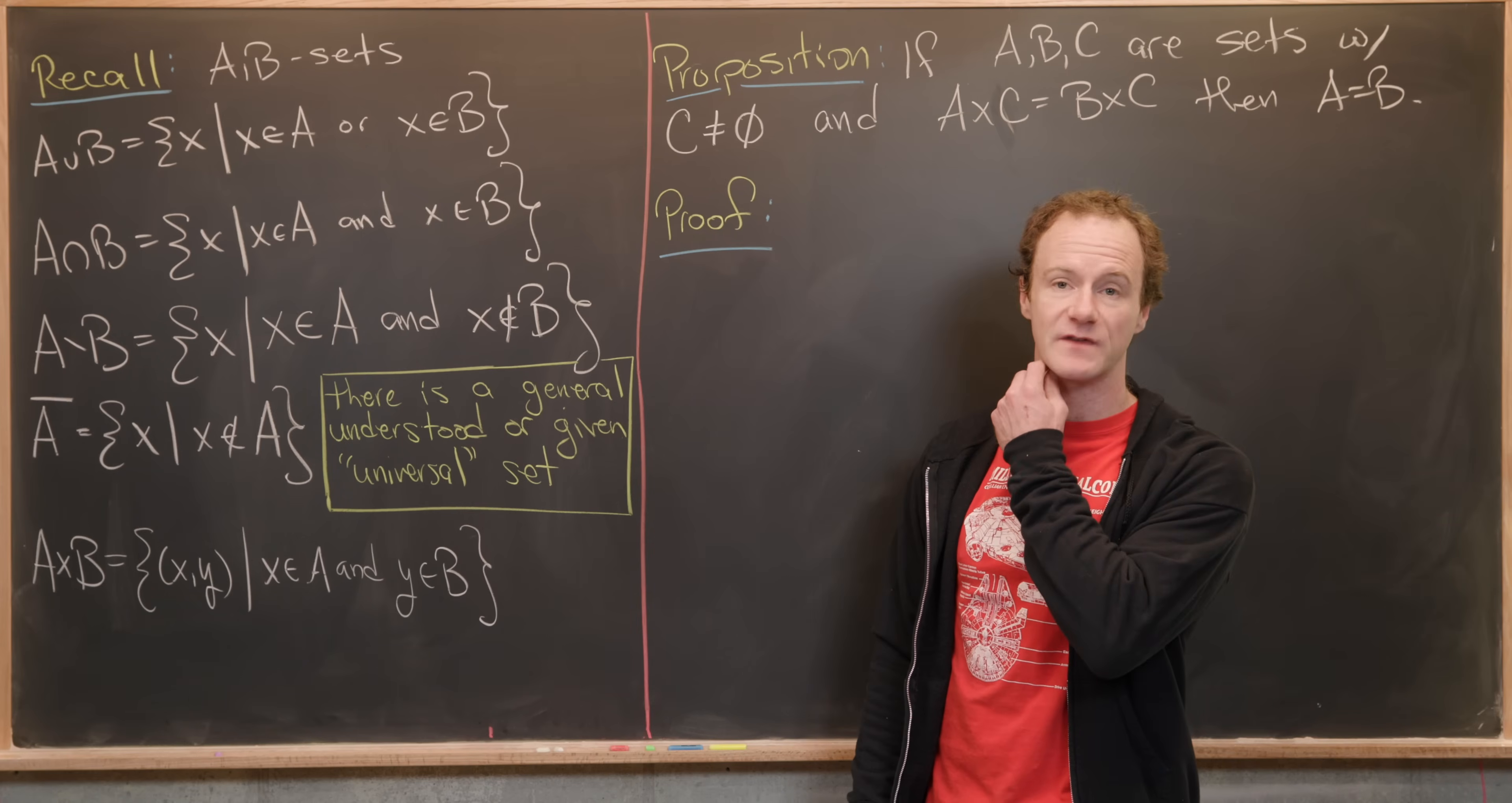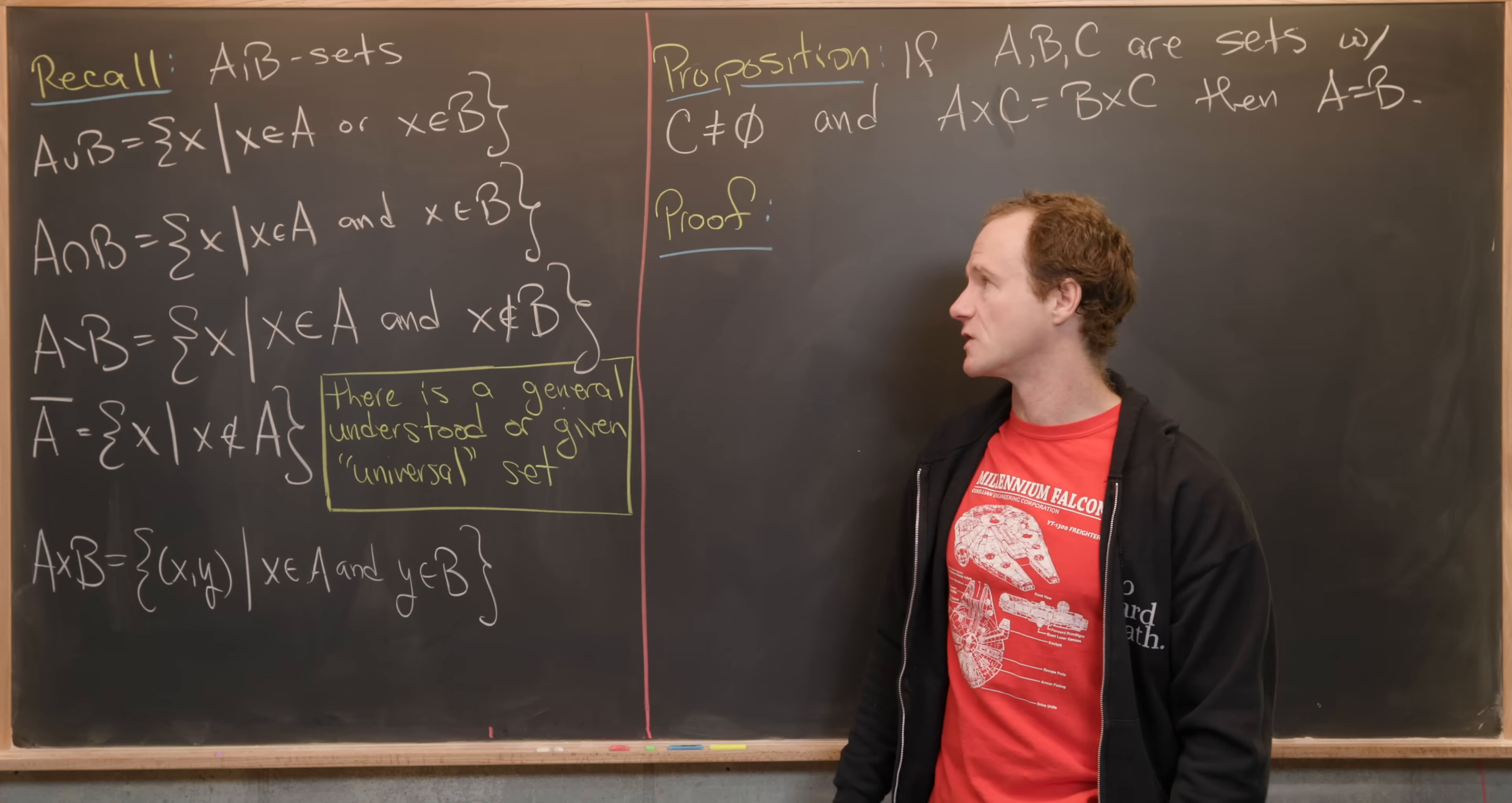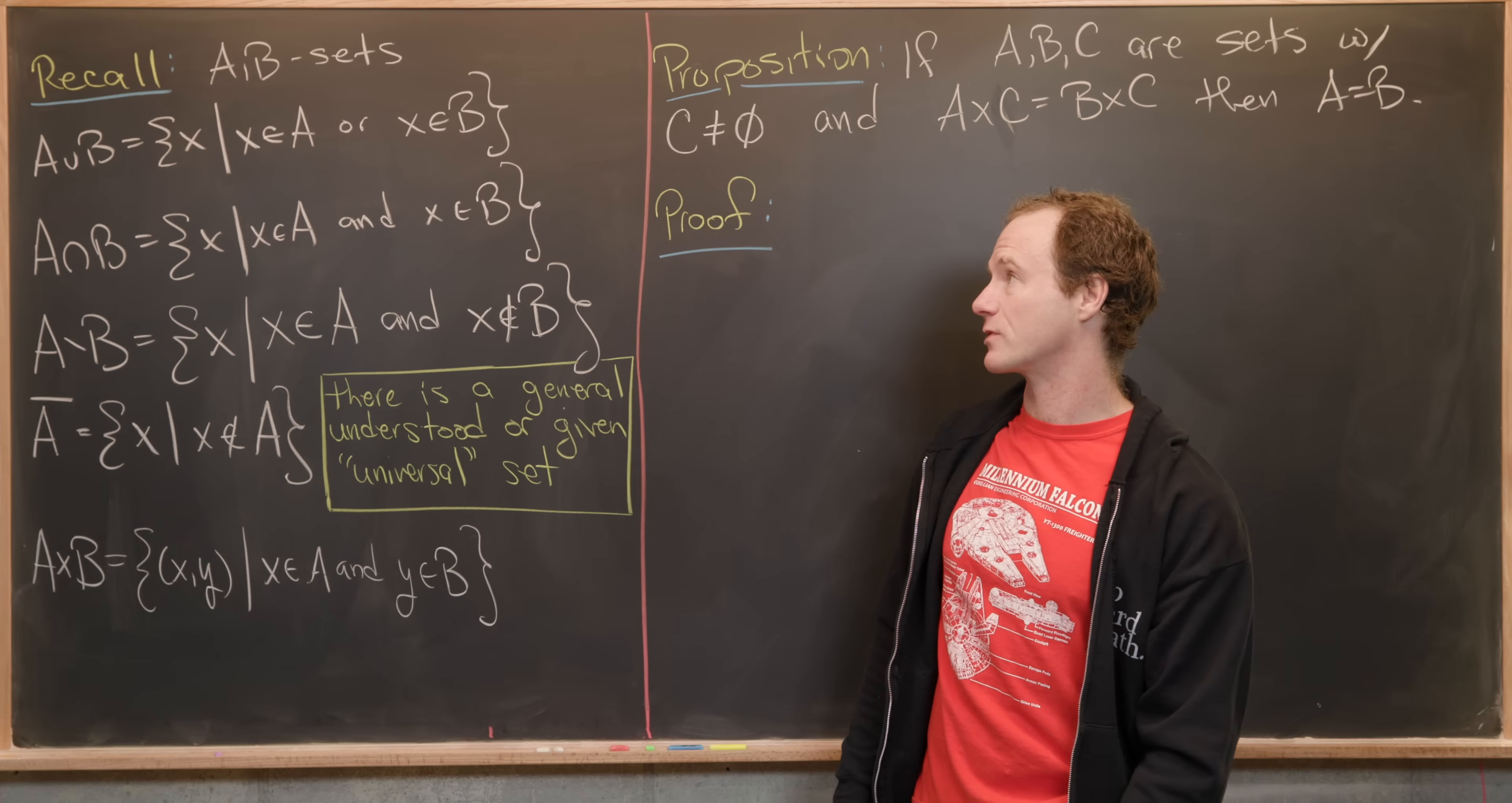In the last video, we looked at proofs involving sets, and we mostly focused on concrete examples of sets, like the set of all even numbers or certain intervals on the real line. Here, we want to do more proofs involving sets, but focus on sets that are arbitrary. Before we do that, I want to recall some arbitrary set operations.